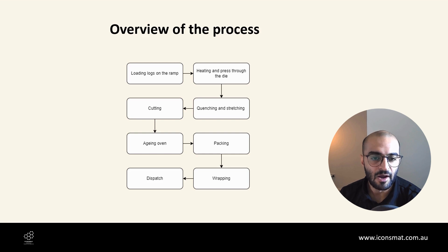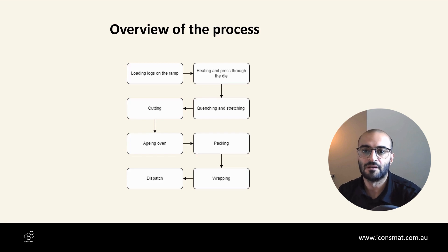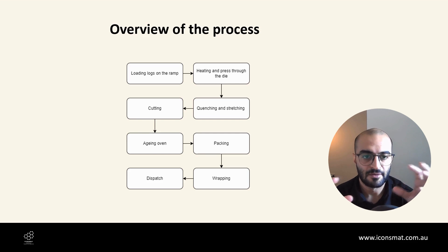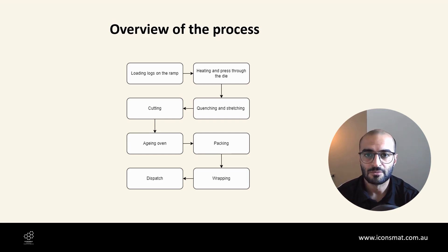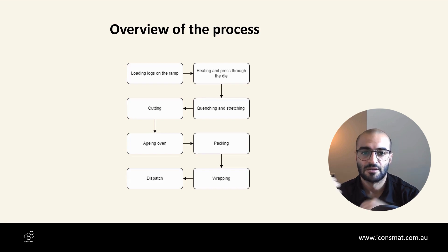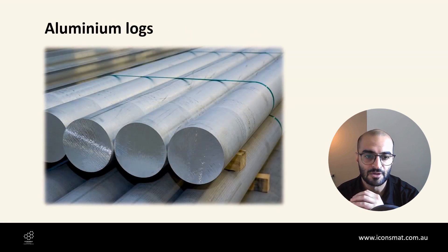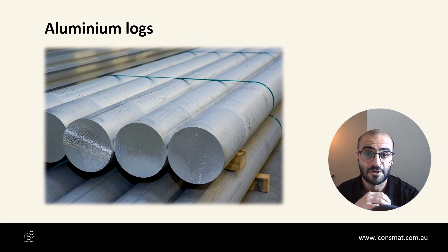It's a highly automated process — you will see more robots than humans in an Aluminium Extrusion plant. It starts by having Aluminium Logs. These are like each log weighing around 1 tonne and they come in bundles — bundles of 3, bundles of 4, bundles of 5. So there will be a forklift driver delivering these logs onto something called a Log Ramp, with Aluminium Logs coming from Aluminium Smelters.